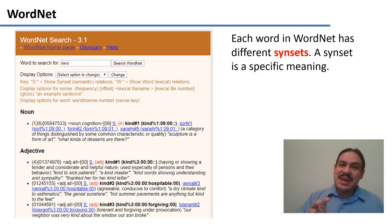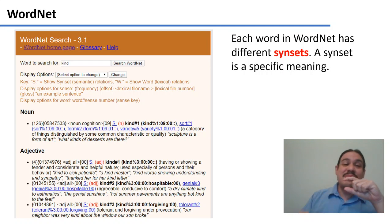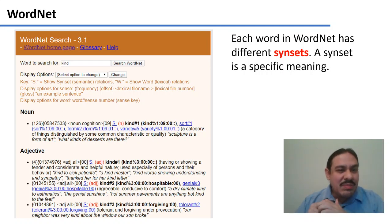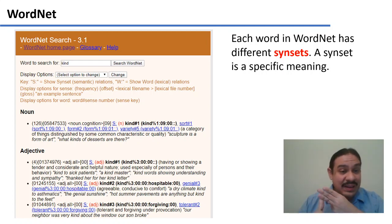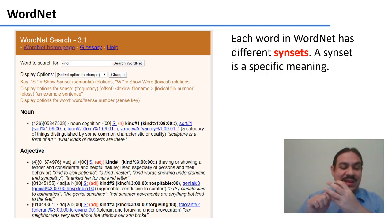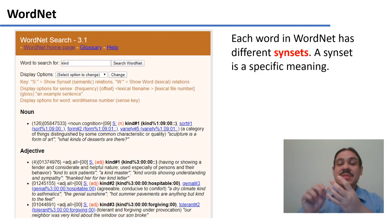A WordNet is made up of words, and the words have specific synsets, which are different meanings of a word. For example, here on the web interface, we looked for the word 'kind' and have several synsets. One is 'kind' like a sort, a form, a variety. There's the adjective 'kind' meaning showing tenderness. There's the adjective 'kind' meaning hospitable, like 'a kind climate.' And there's the meaning kind number three, which is tolerant and forgiving — 'our neighbor was kind.' So these are four different synsets for the word 'kind,' each with different sub-properties.